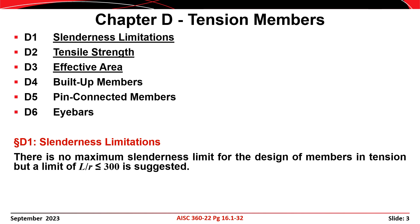While there isn't a hard limit, there is a recommendation that says that the slenderness, L over r, preferably should not exceed 300, where L is the length of the member and r is the radius of gyration. Slender members are more susceptible to inadvertent damage during fabrication, transport, and erection, and are susceptible to vibrations when excited by wind, vibrating mechanical equipment or HVAC units, or even by normal use of the structure.